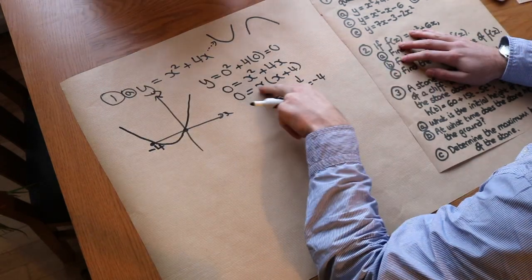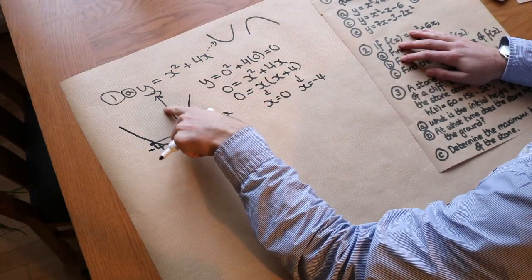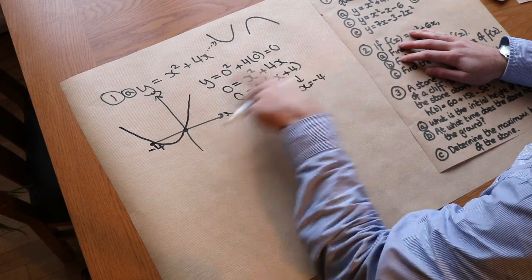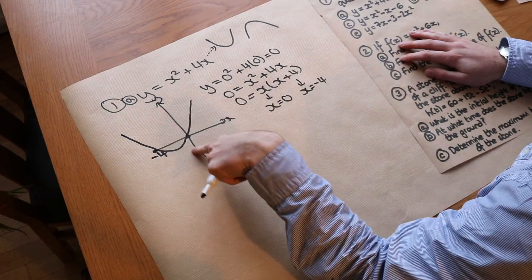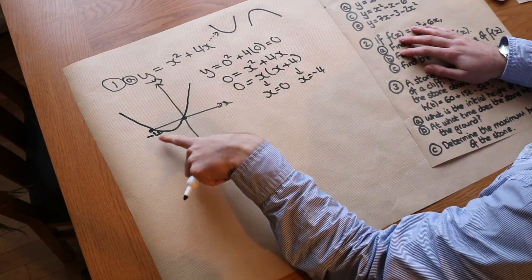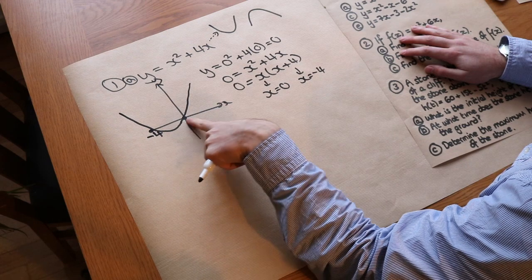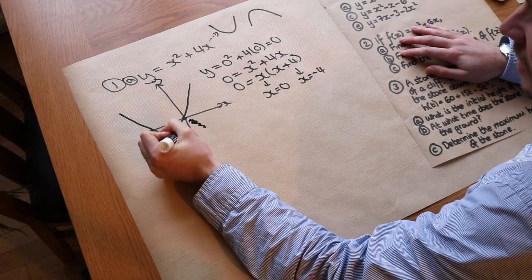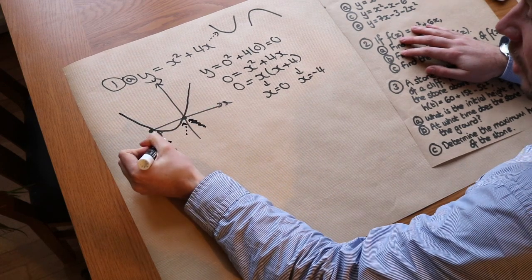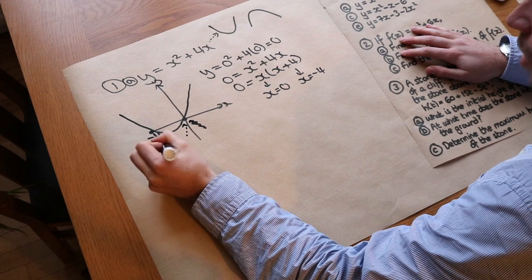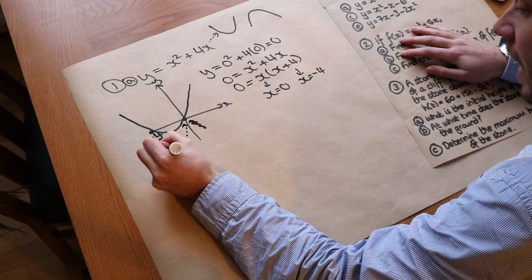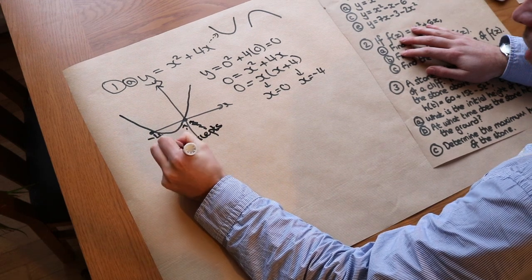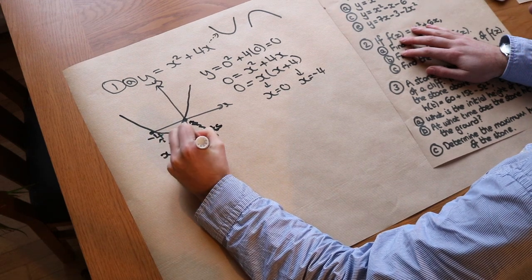Note this is a sketch, so we don't care about any scale on the axis and you shouldn't put any other numbers on it except for your x intercepts. The x intercepts are also known as roots.